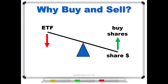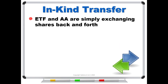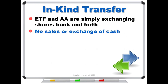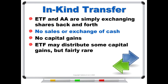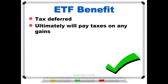The bigger reason for having an authorized agent is it creates what's called an in-kind transfer. The ETF and the authorized agent are simply exchanging shares back and forth — no money is changing hands, no cash is exchanged, and because of that there are no capital gains. It is possible that the ETF may distribute some capital gains through the year, but it's fairly rare. So the first big benefit you get as an investor is that ETFs are tax-deferred. That doesn't mean taxes are avoided — you will ultimately pay taxes on any gains — but the big point is that you get to determine when those taxes are triggered.